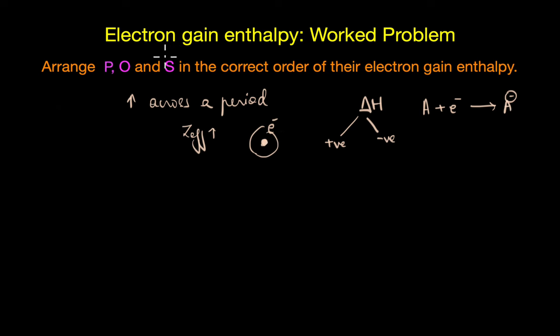So this is why the trend is that it increases in general across a period and decreases down the group. As we go down the group, the atomic size increases and that means the added electron would be farther and farther away from the nuclear attraction.